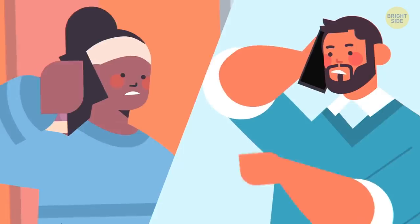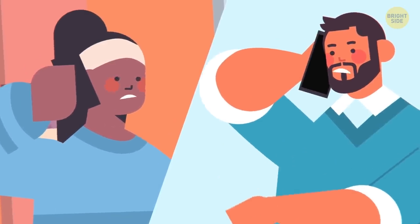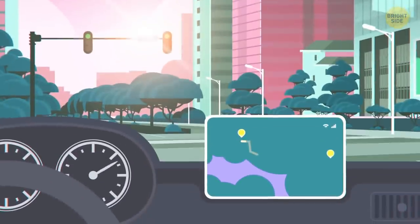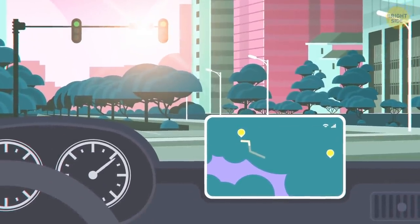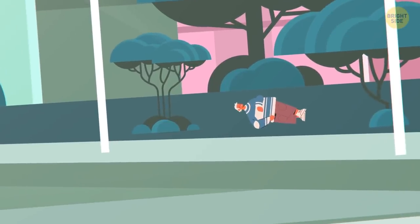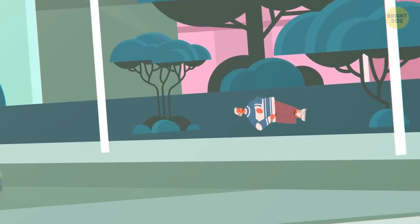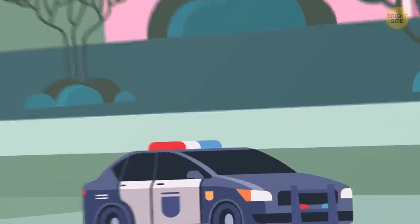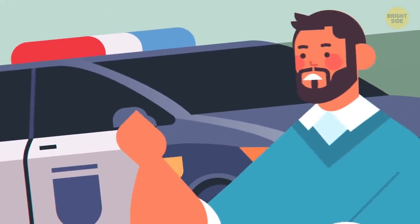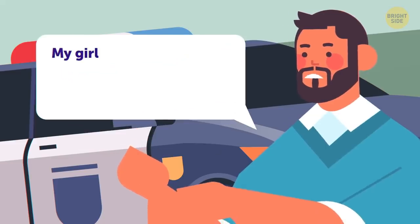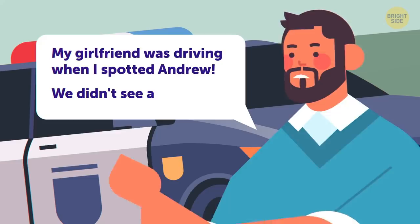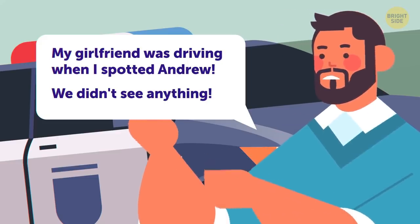Leo called his girlfriend and asked her to give him a lift to the optician. He couldn't drive without his glasses. They were turning onto the main road when they spotted Andrew. He was lying in the bushes, unmoving. Leo immediately called the police and ambulance. Andrew was taken to a hospital, and a police officer started to question the witnesses. Leo told him, my girlfriend was behind the wheel when I spotted Andrew. We immediately stopped and called you. We didn't see anything suspicious.